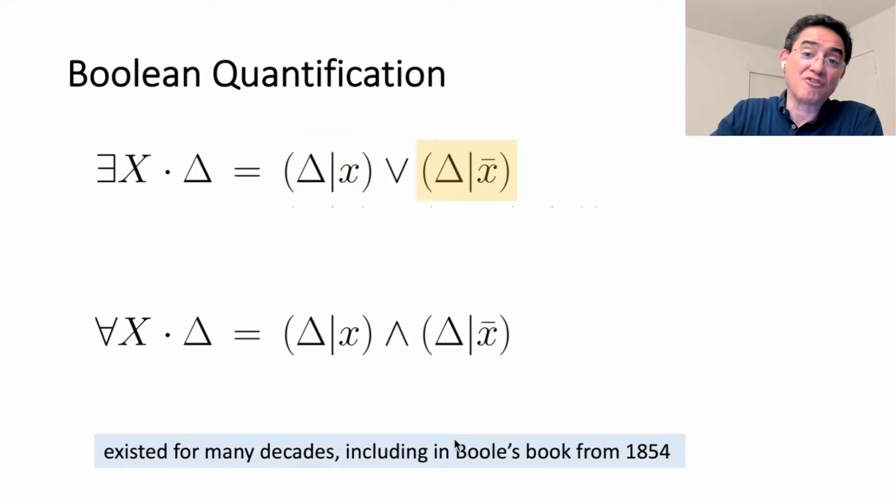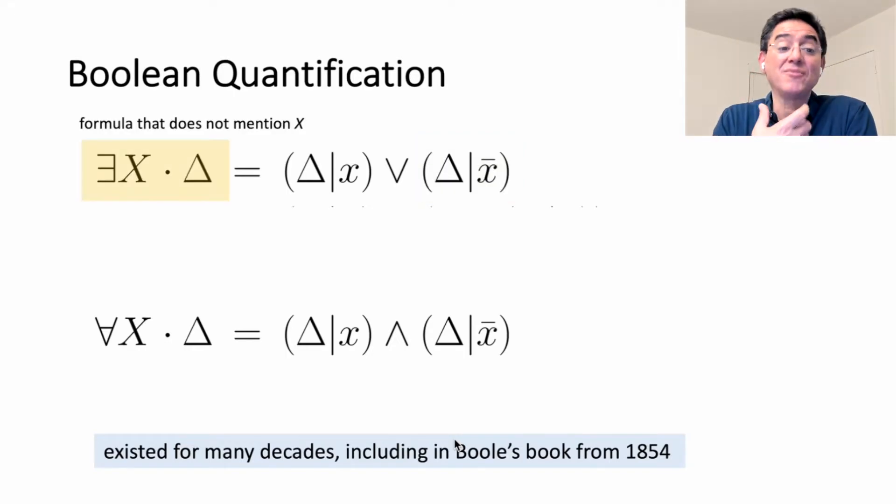We're replacing occurrences of the variable with the constant true. We say we are conditioning the formula on x being true. This says condition the formula on x being false. We disjoin them. We get our quantified Boolean formula in this particular case. Universal quantification is the same, except that we use conjunctions instead of disjunctions.